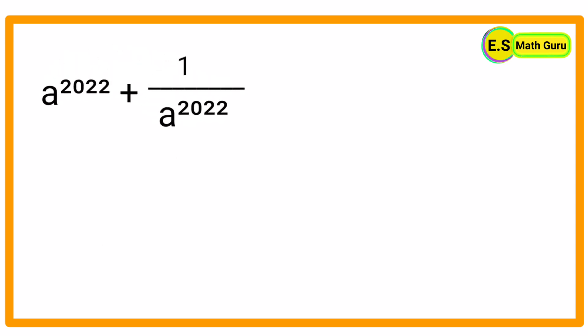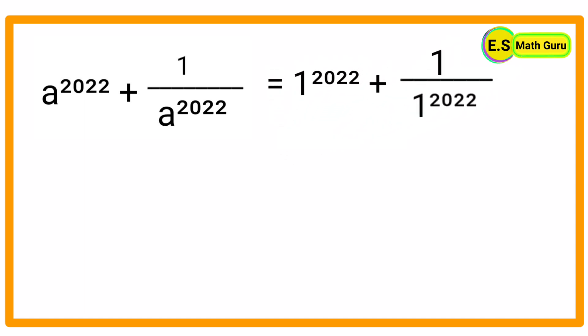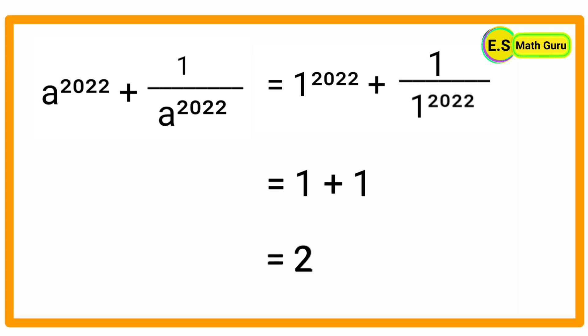Now let us find the value of a²⁰²² + 1/a²⁰²² by replacing a with 1. Then we get 1 + 1, which is equal to 2. Therefore, the value of a²⁰²² + 1/a²⁰²² is equal to 2.